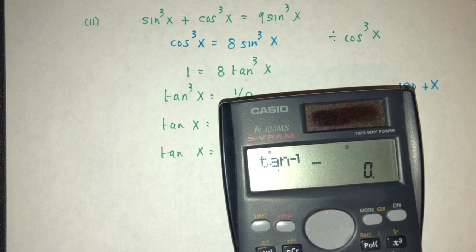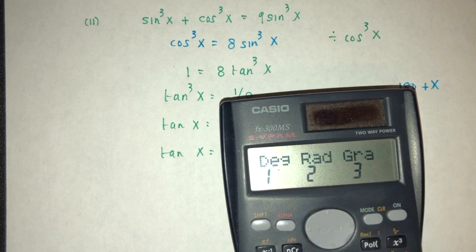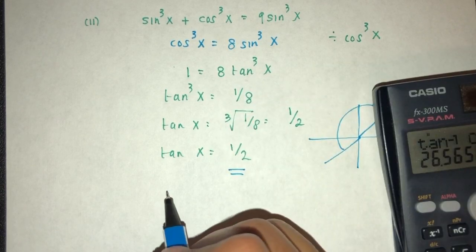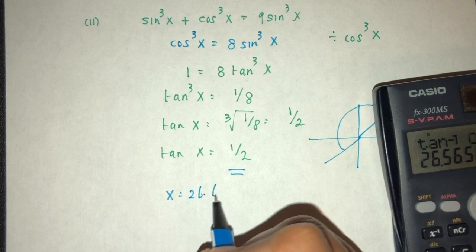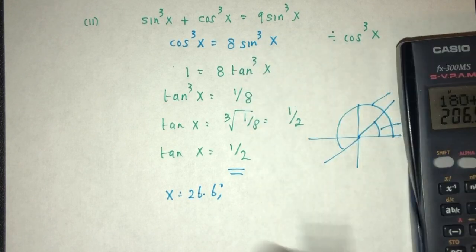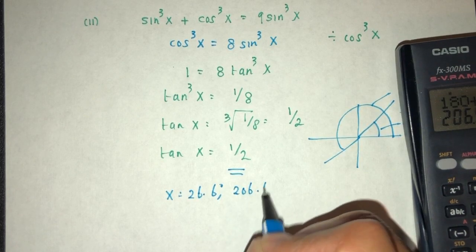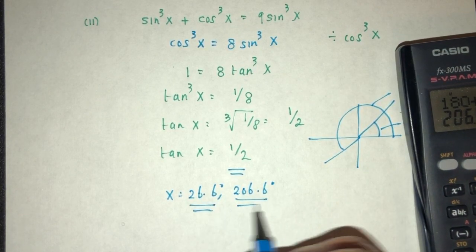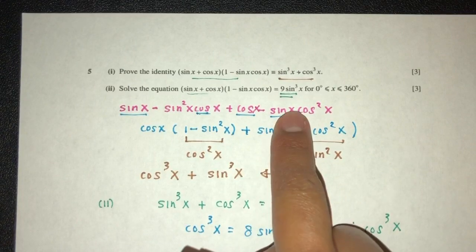Tan inverse of half, that will be in degrees here, that will be 26.6 and here we have to find 180 plus the answer that should be 206.6. So these are the two values of x for which we have this equation.